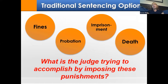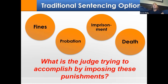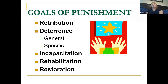The traditional forms of punishment today include fines, where you pay money; imprisonment, putting someone in jail; probation, where a sentence is suspended and you stay out under supervision; and death. When a judge decides which punishment is appropriate, they are evaluating the different goals of punishment. There are five main goals: retribution, deterrence, incapacitation, rehabilitation, and restoration.